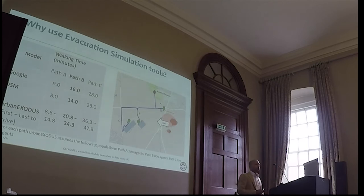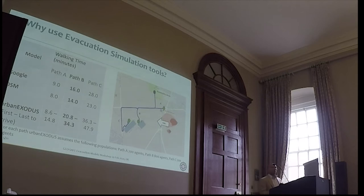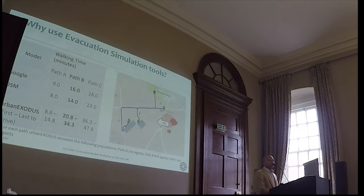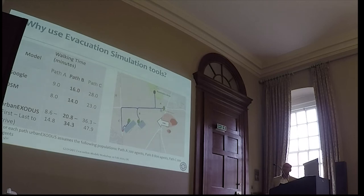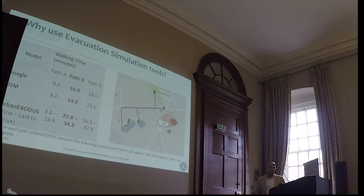We established that people would gather at the assembly area at the Great Collins recreation ground. Without simulation tools like Urban Exodus, we could use Google Maps and OpenStreetMaps to determine average travel time from point A to point B. But this doesn't account for notification times, response times, or group dynamics. Urban Exodus estimates the first person reaches from the transport research laboratory to the assembly area in 20.8 minutes — not very far off from Google Maps. However, the last person takes almost double the time estimated by Google Maps.